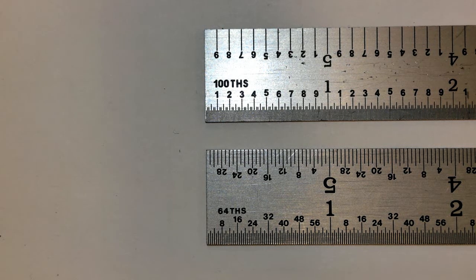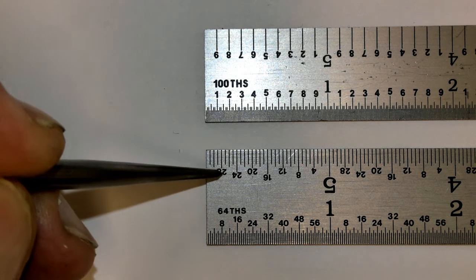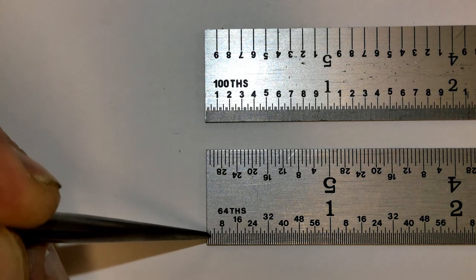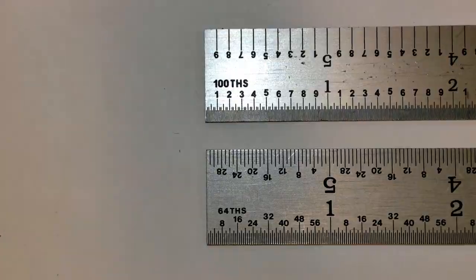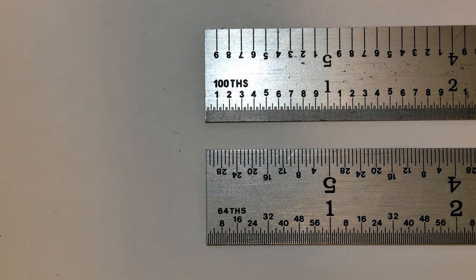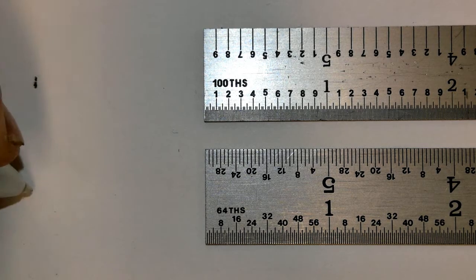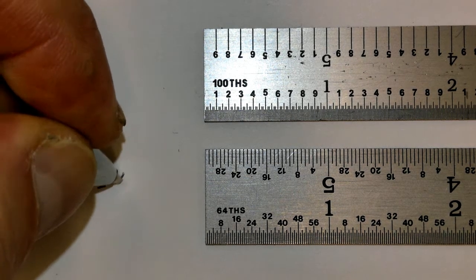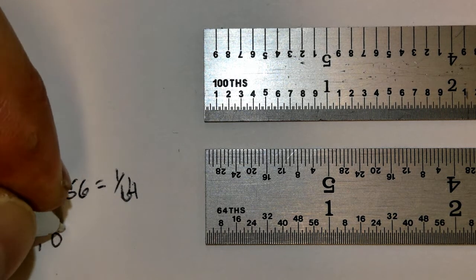Going back over what we went over in class today when we're talking about the scale, these are our fractions: 64ths, 32nds. As we look at each one of these increments from line to line, it's a 64th of an inch, or 0.0156. So 0.0156 equals 1/64th, and then approximately 32 thousandths equals 1/32nd.